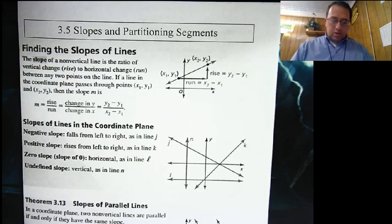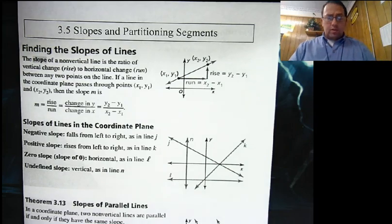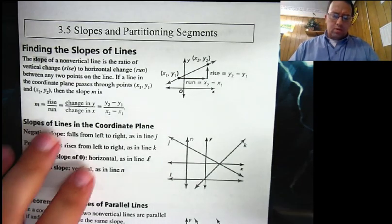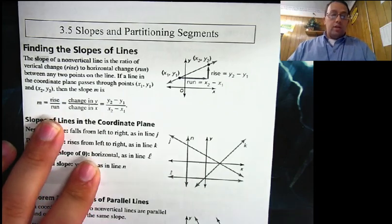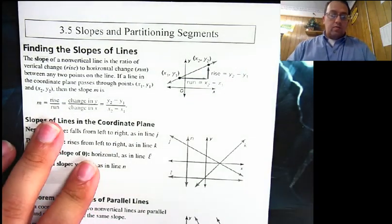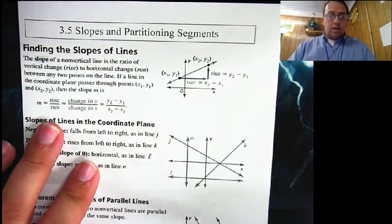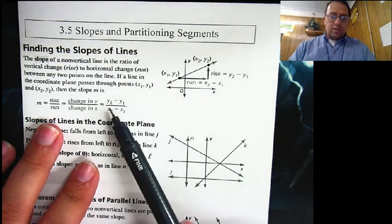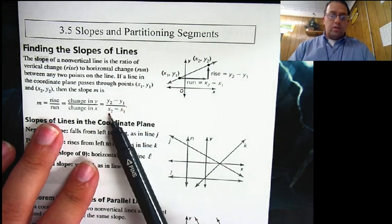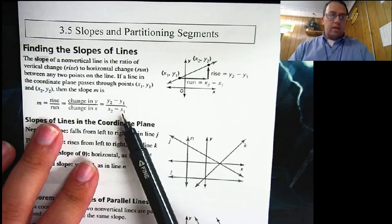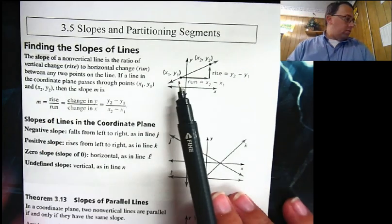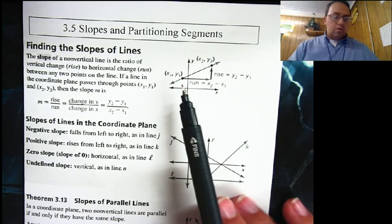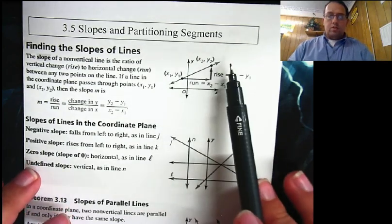Everybody should remember this from whenever it was y'all did that — sixth grade, maybe earlier. Slope is rise over run. It is the change in y over the change in x, or another way you could have this is y2 minus y1 divided by x2 minus x1. And remember, very important, you always go from the left to the right.